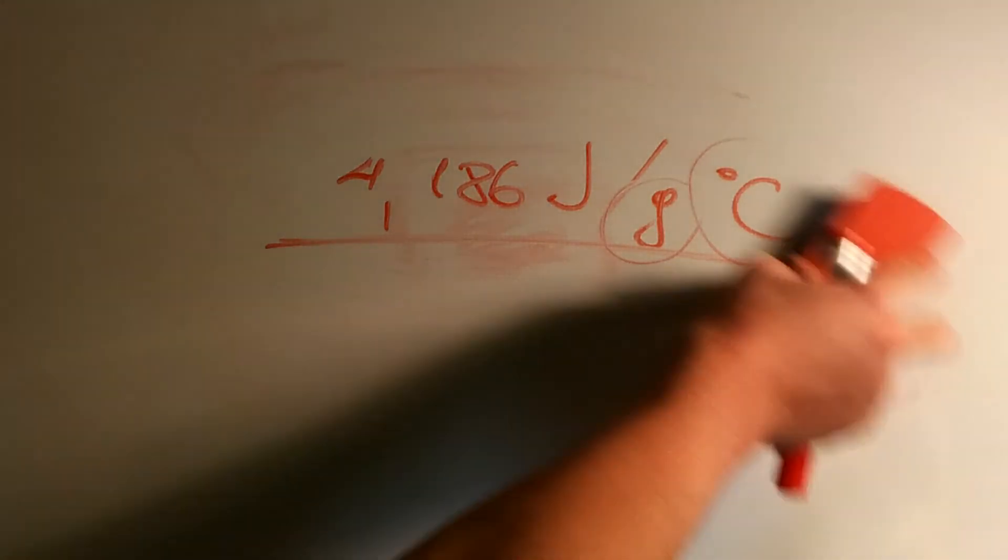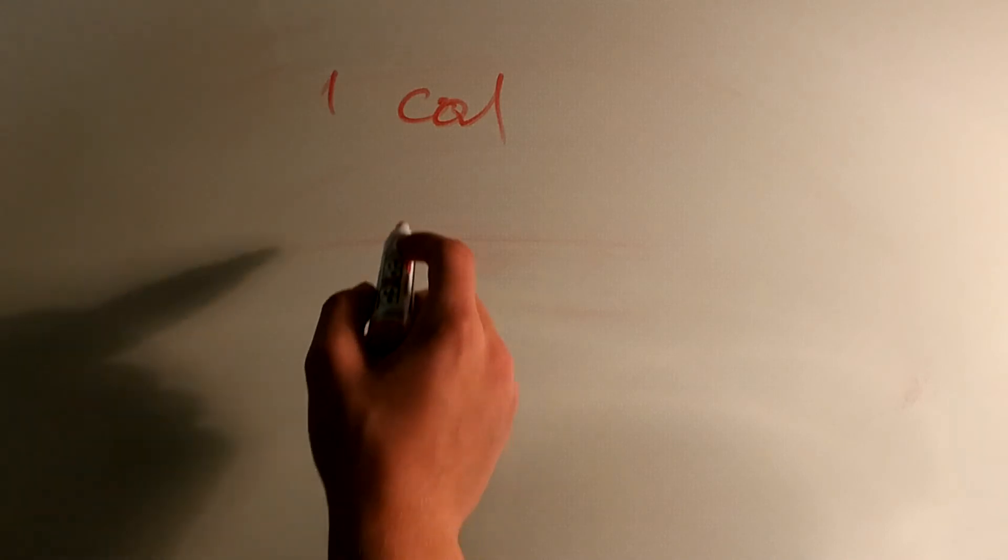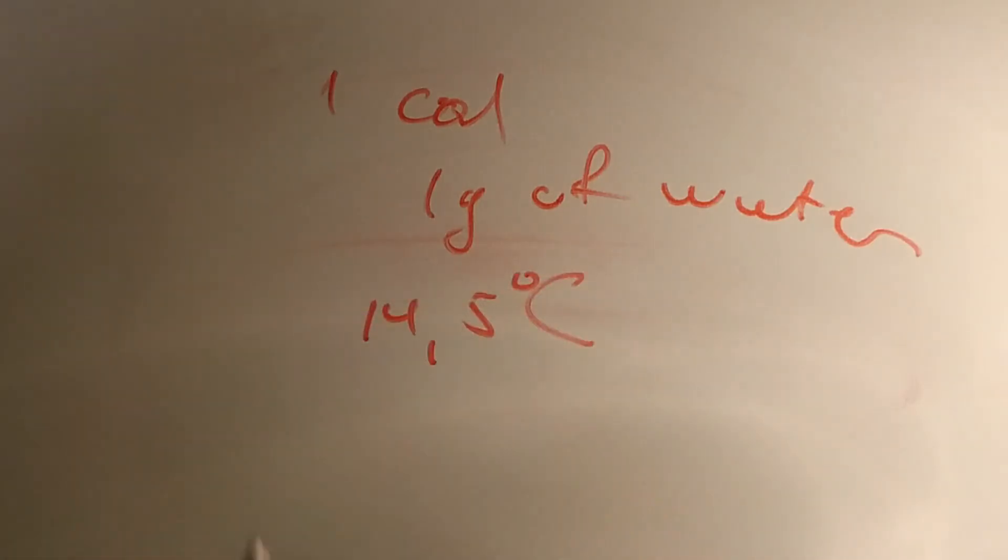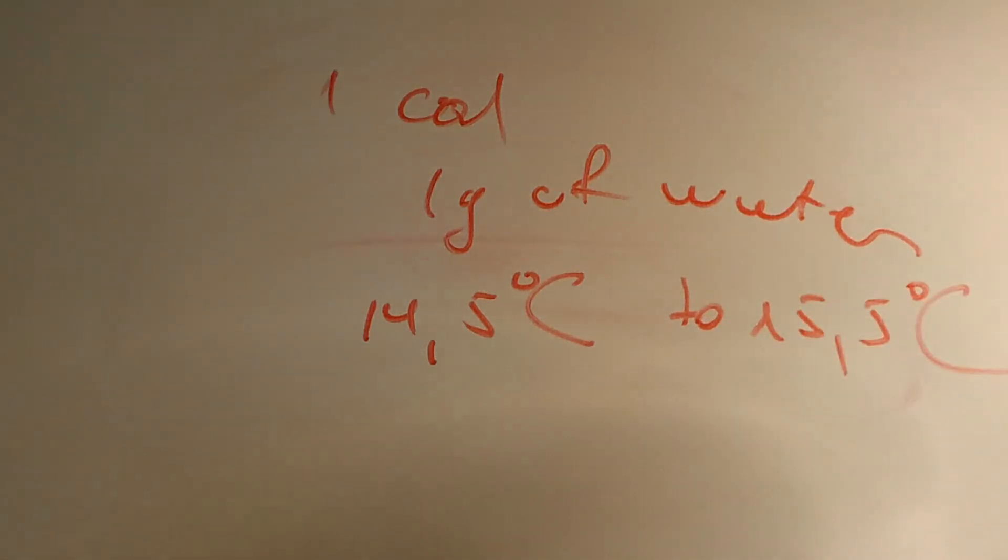Now the interesting thing is that in order to be more precise, instead of saying that 1 calorie is equal to the amount of energy needed to raise the temperature of 1 gram of water by 1 degree, we should specify that it's 1 gram of water from 14.5 degrees Celsius to 15.5 degrees Celsius.